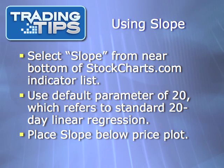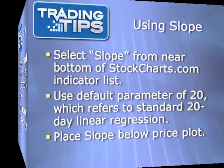Slope can be used on stockcharts.com without getting into chart annotations or the RAF regression channels. Simply select it from near the bottom of the indicator list. The default parameter of 20 is recommended, as it refers to the standard 20-day linear regression we talked about earlier. We also recommend that you place slope below the price plot.